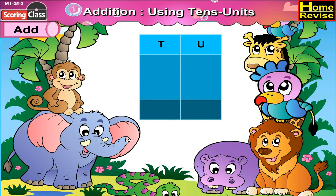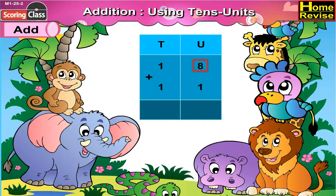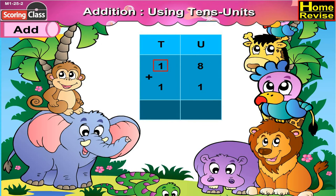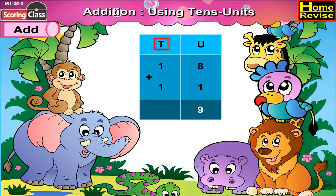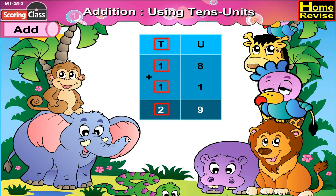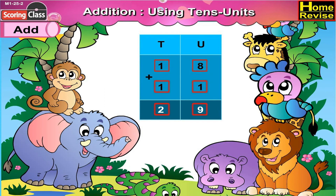Next sum. Under units we have 8 plus 1, under 10s we have 1 plus 1. Under units column, 8 plus 1 is 9, and under 10s column, 1 plus 1 is 2. So 18 plus 11 is 29.